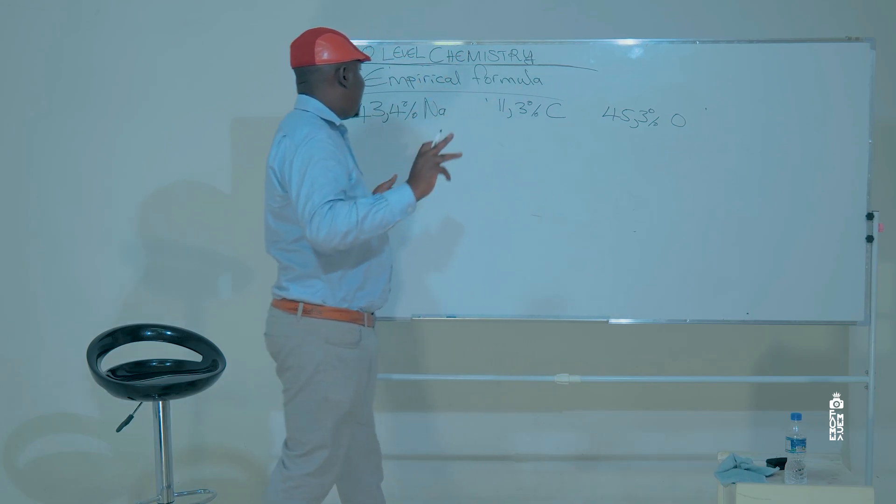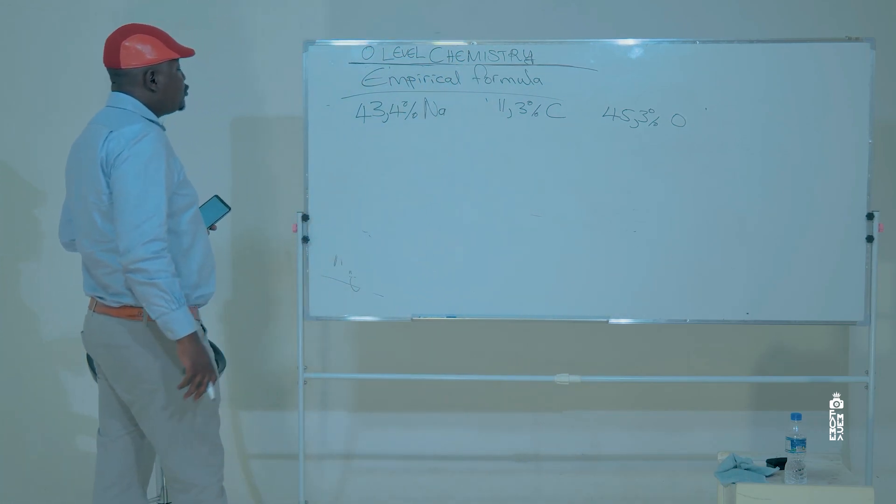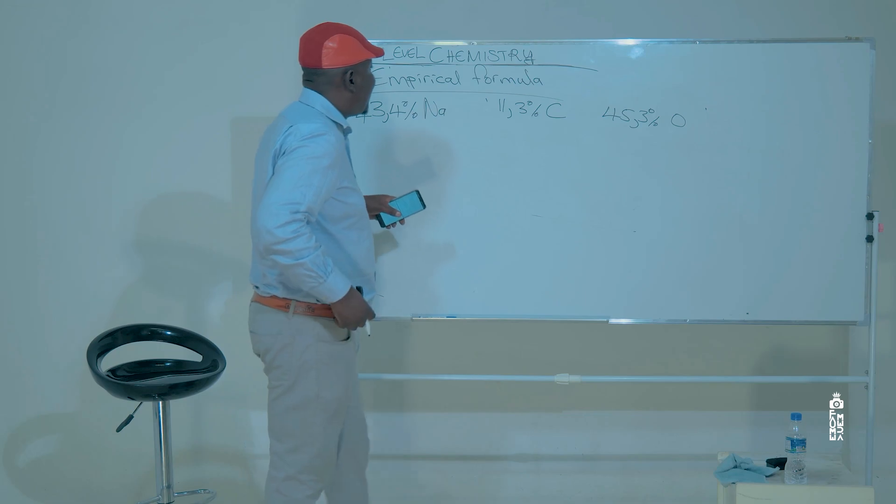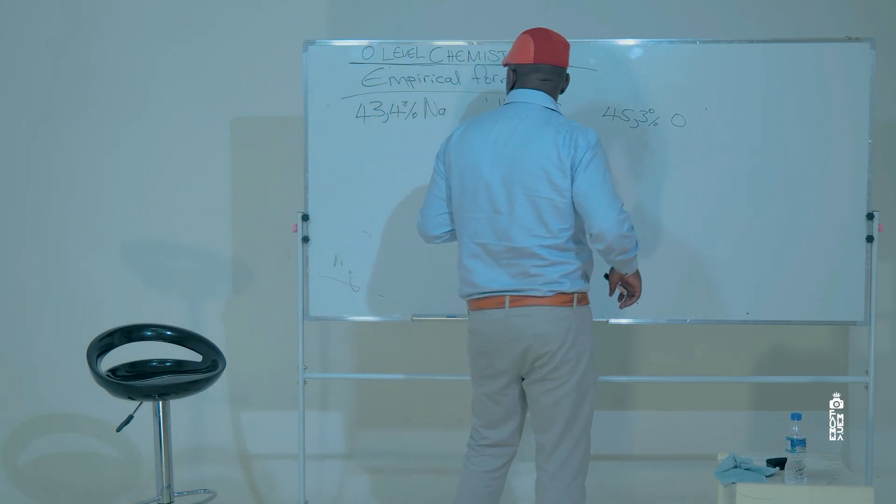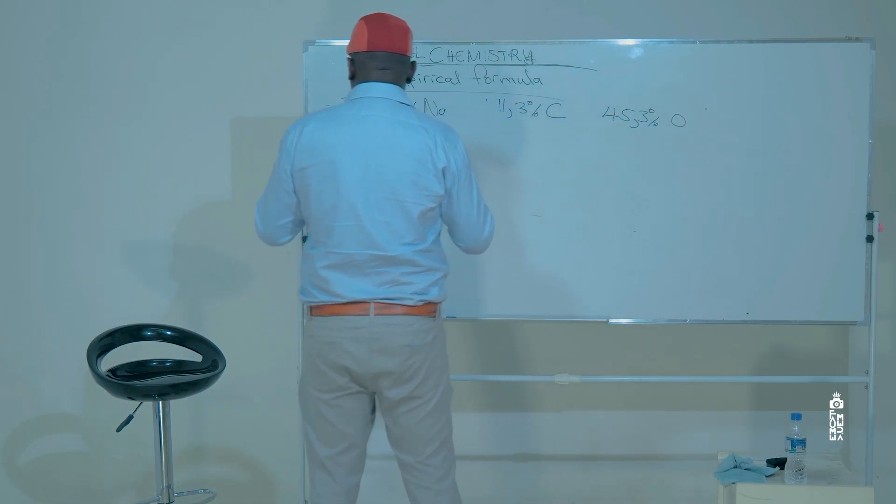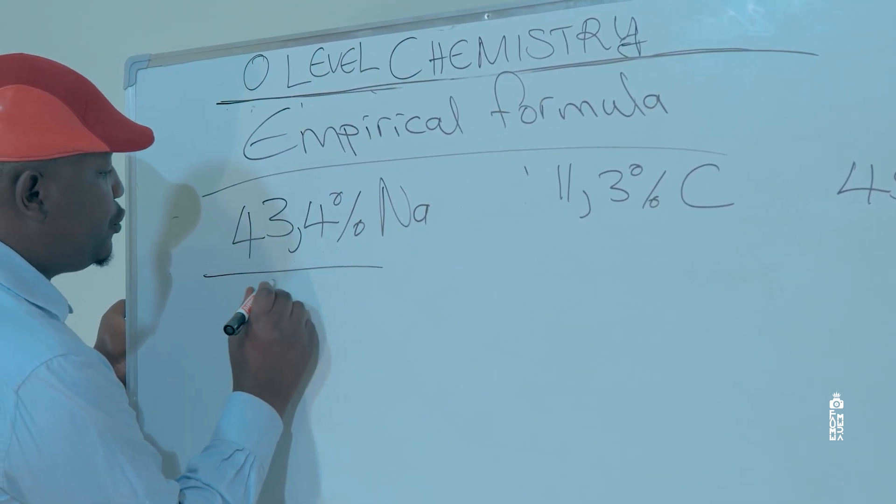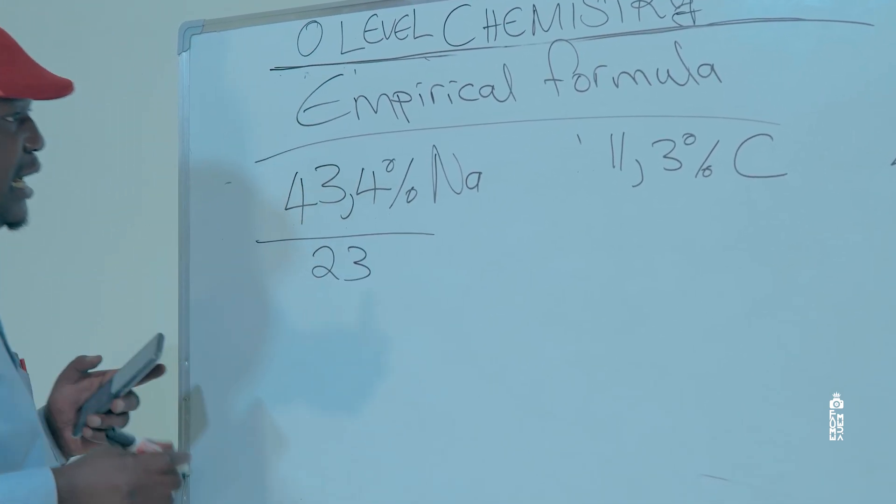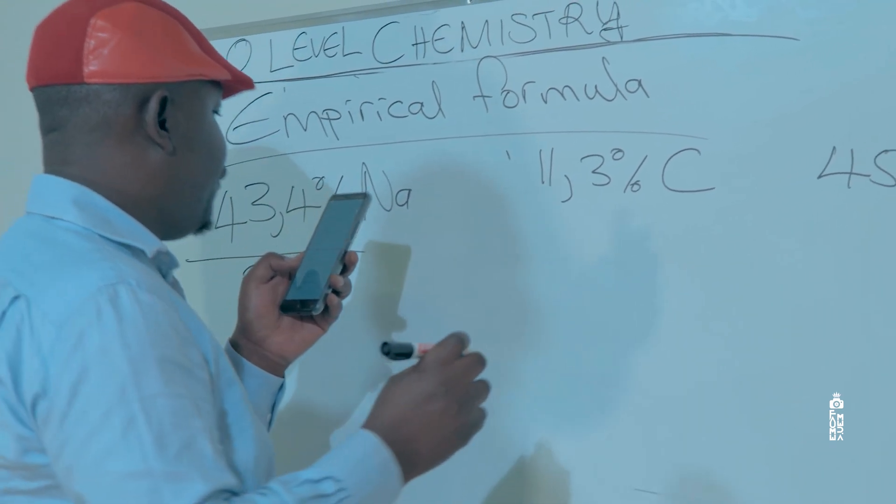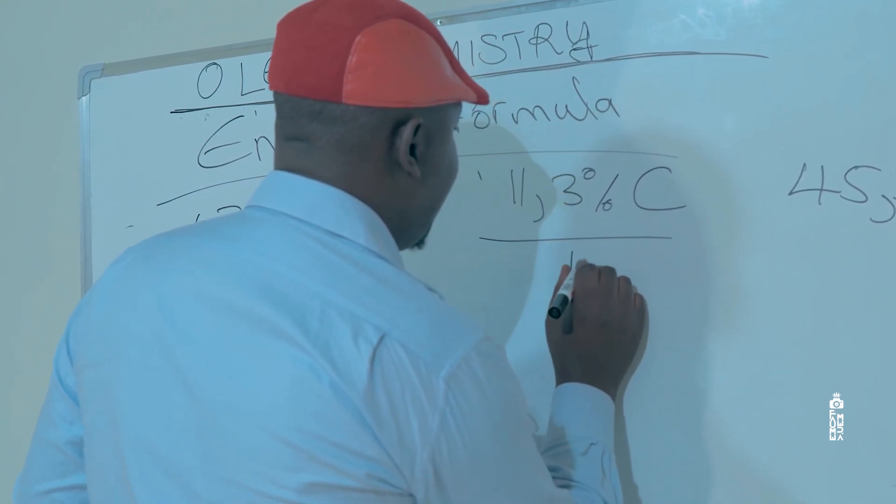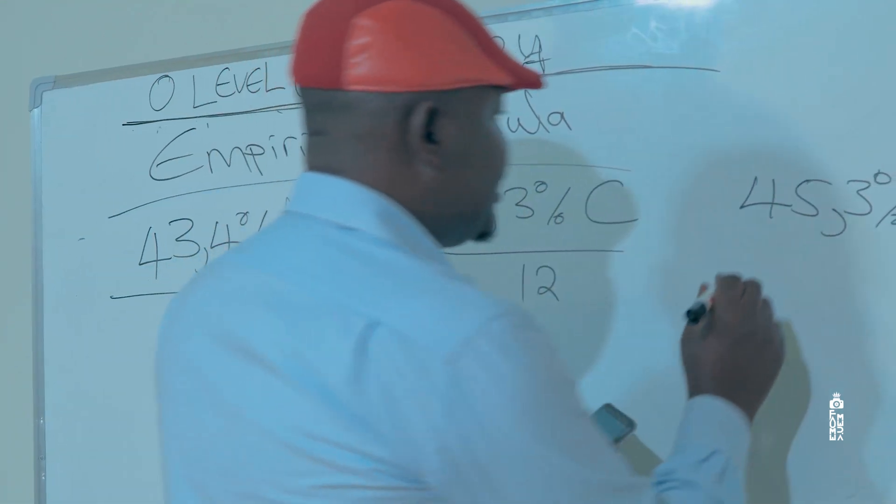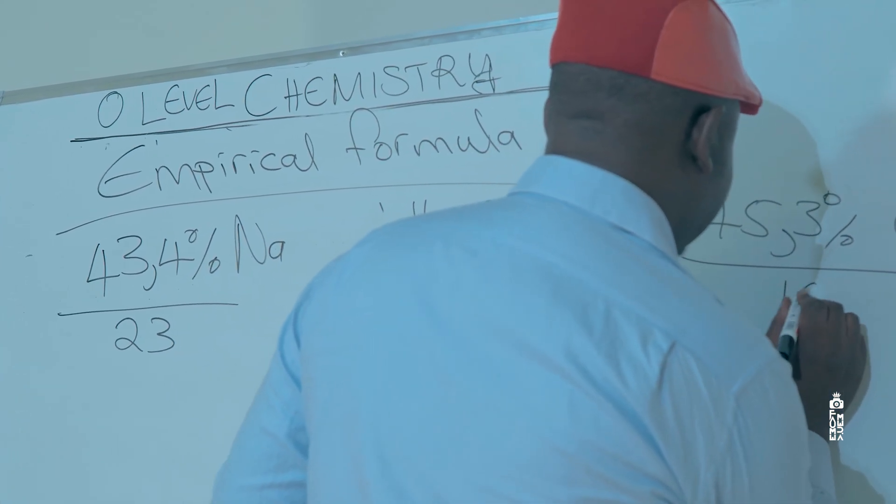Step number one, remember ladies and gentlemen, we are going to divide each and every element by its relative atomic mass. The relative atomic mass for sodium is 23, so we divide by 23 here. Relative atomic mass for carbon is 12, so we divide here by 12. For oxygen is 16, we divide here by 16.